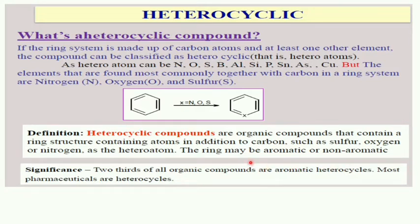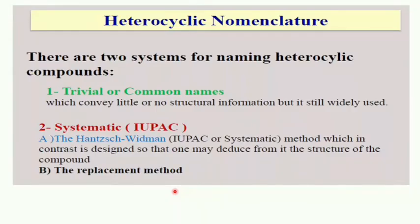For naming heterocyclic compounds, there are two systems: trivial or common names, and systematic or IUPAC names. Trivial names convey little or no structural information but are still widely used for most heterocyclic compounds — they do not represent structural information directly.